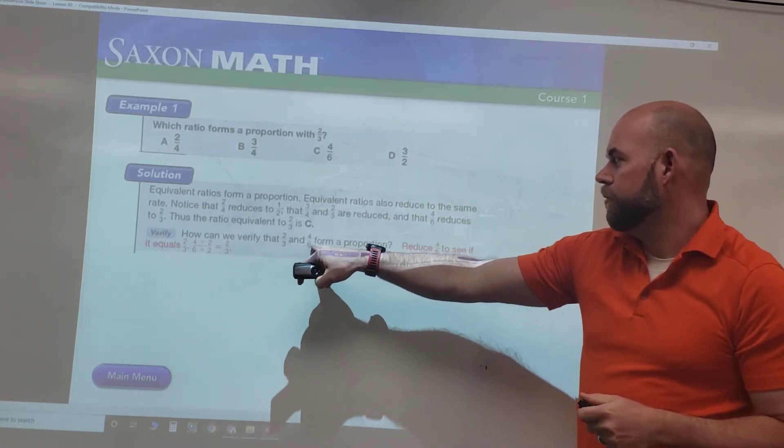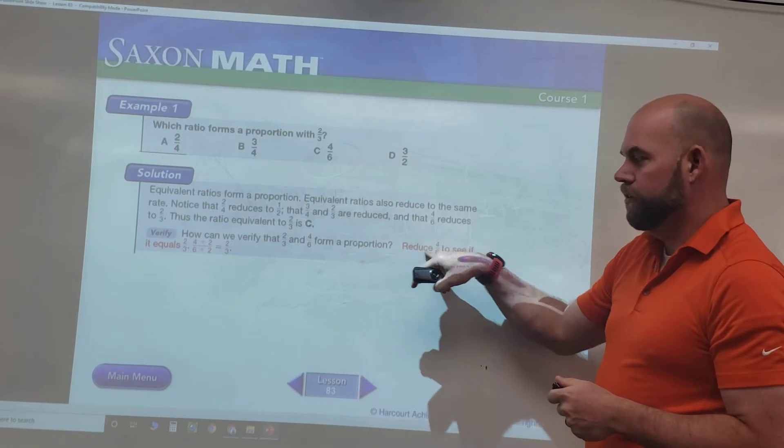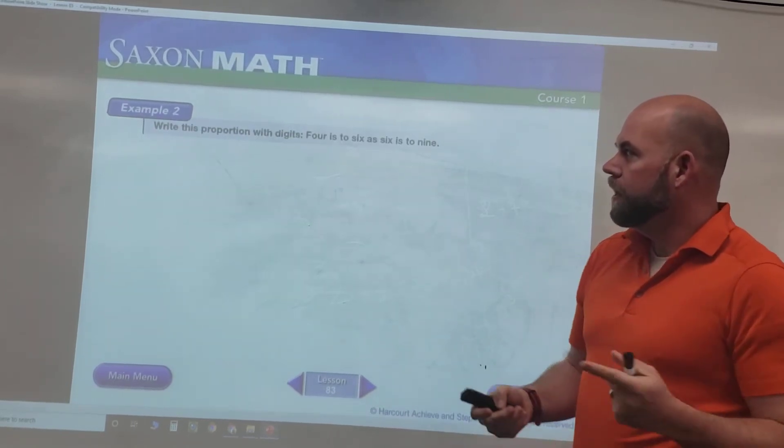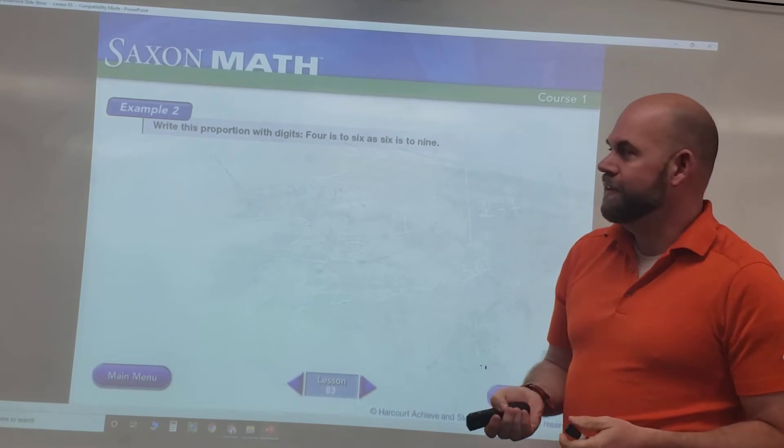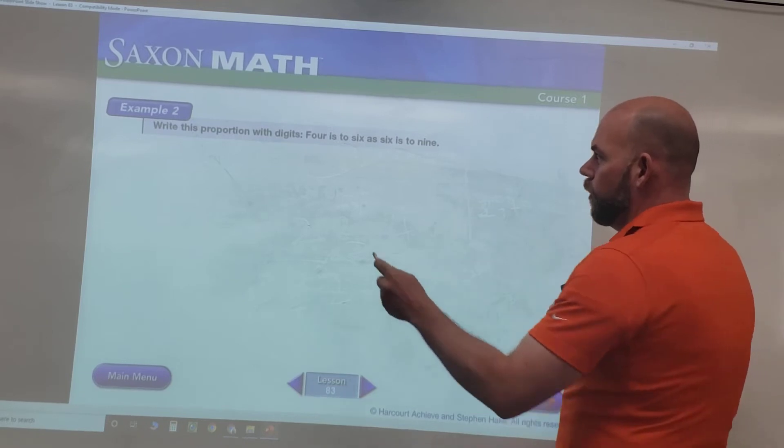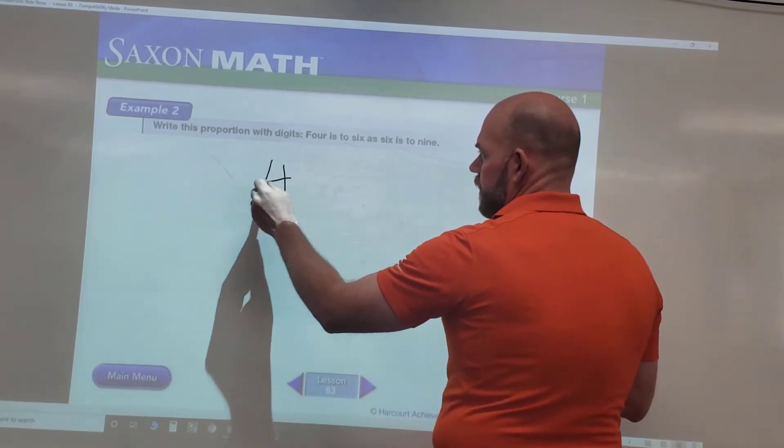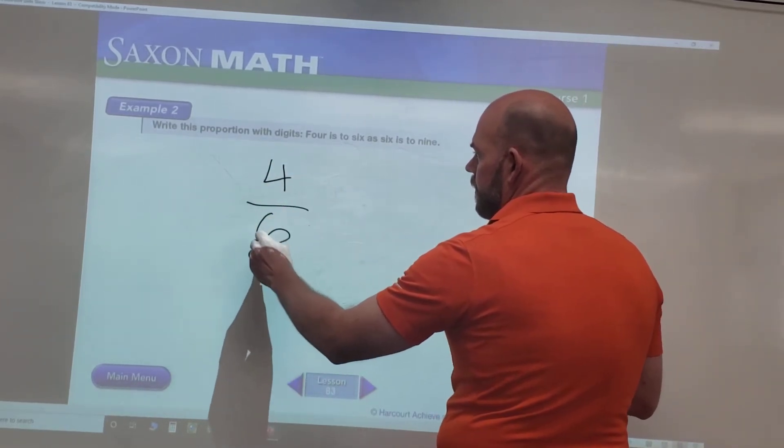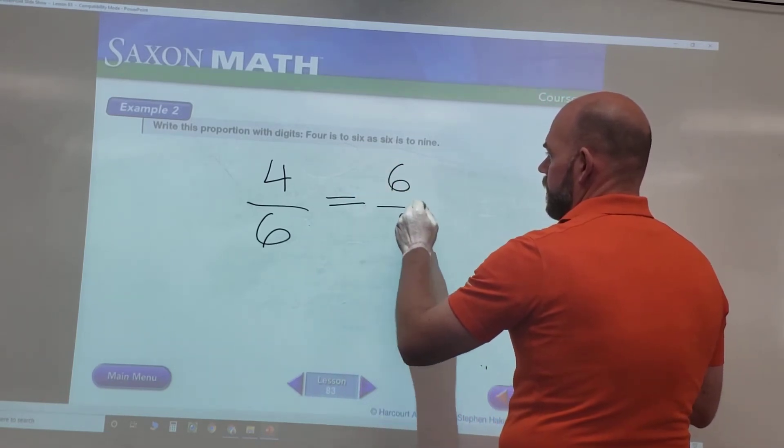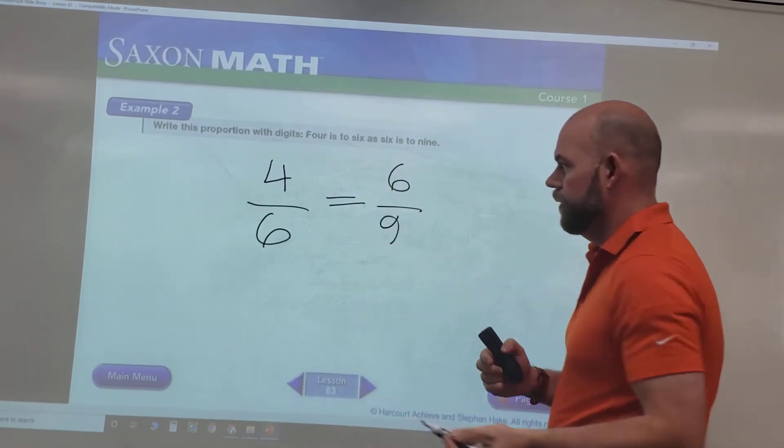All right, it's having us check our work. How can we verify that two is to three and four is to six form a proportion? We just reduce it. That's what we want to do here. On the example, to write this proportion with digits: four is to six as six is to nine.